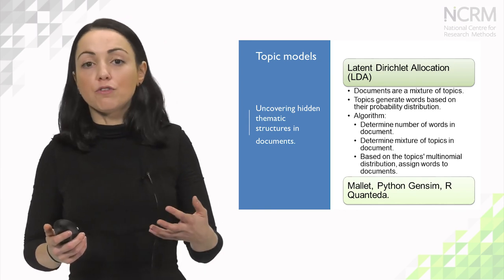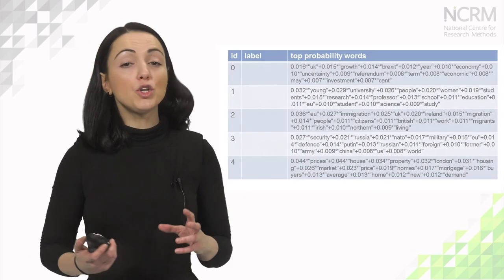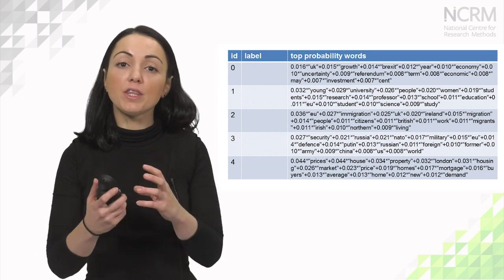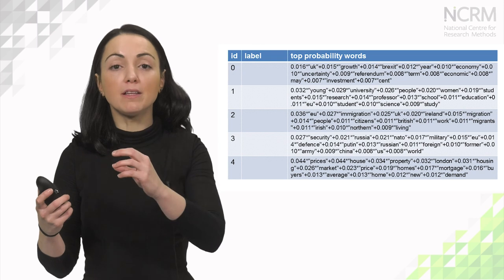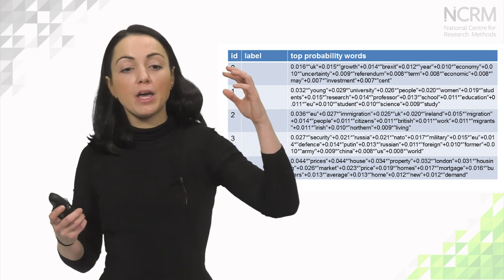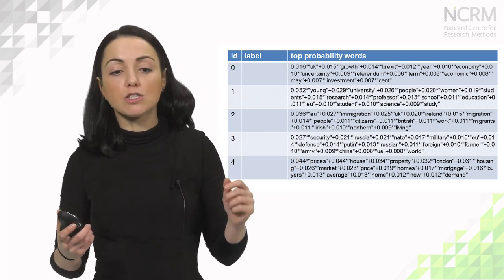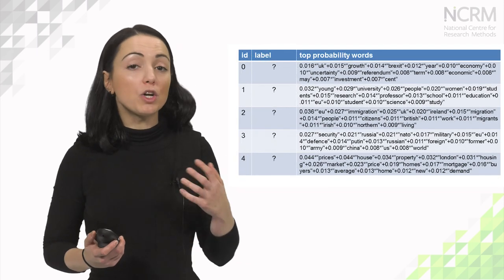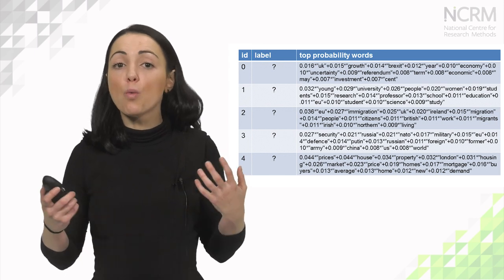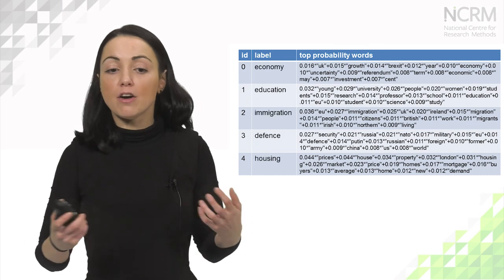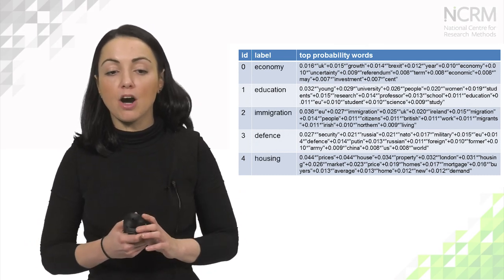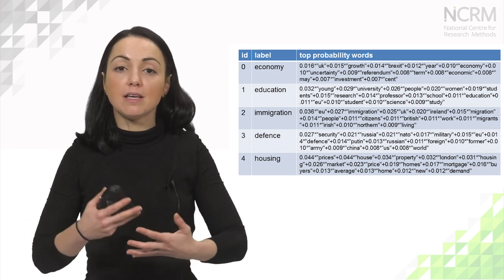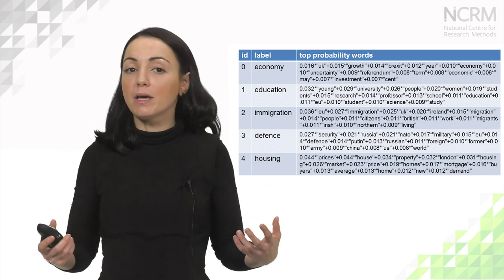What you get out of LDA is a number of topics — depending on how many you specified — along with a list of words and their corresponding probability of being assigned to each topic. For example, one topic might have the words: young, university, people, women, student. What you don't get is the label for that topic; you have to read through the word list and figure it out yourself. Another example is an immigration topic, with words: EU, immigration, UK, Ireland, migration, people. By reading the words and their probabilities, you can determine the topic is about immigration.